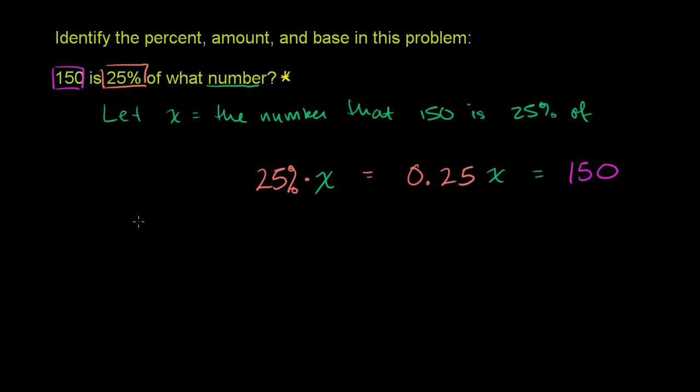So let's just start with this one over here. So if we just have, let me just write it separately so you understand what I'm doing. 0.25 times some number is equal to 150. Now, there's two ways we can do this. We can divide both sides of this equation by 0.25.